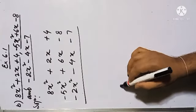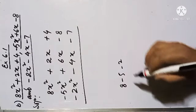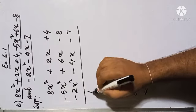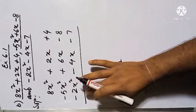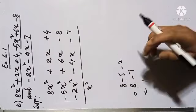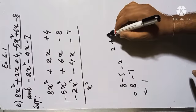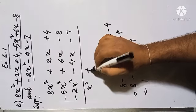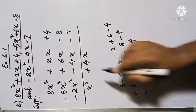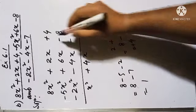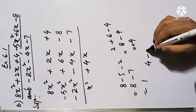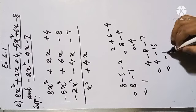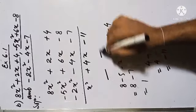For the x squared terms: 8 minus 5 minus 2 gives 8 minus 7, that means 1, so 1x squared — you can just write x squared. For the x terms: 2 plus 6 minus 4 gives 8 minus 4, which is 4, so plus 4x. For the constant terms: 4 minus 8 minus 7 gives 4 minus 15, which is minus 11, so minus 11. That is the answer.